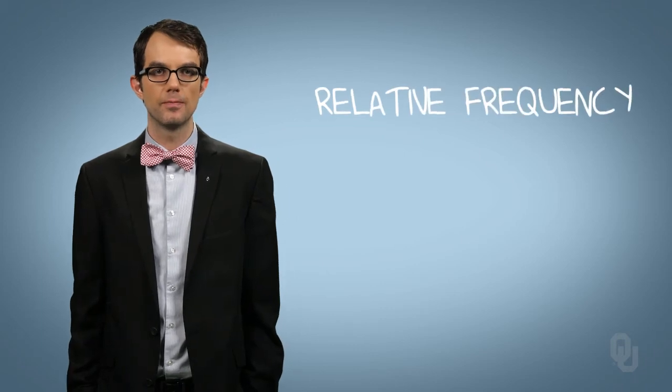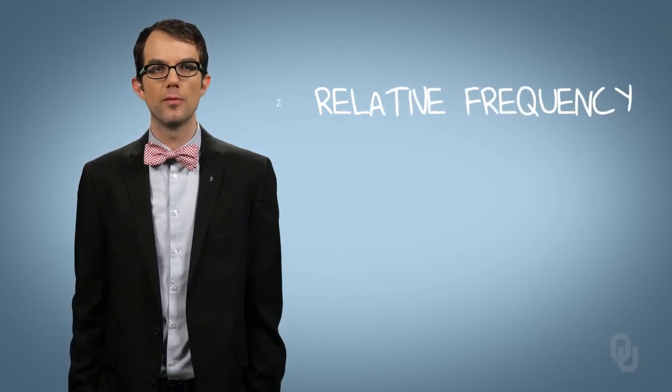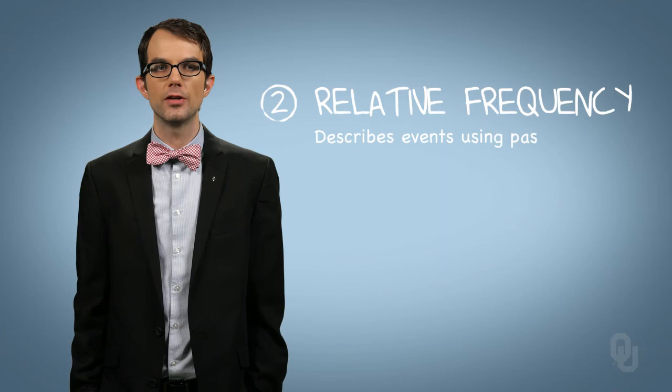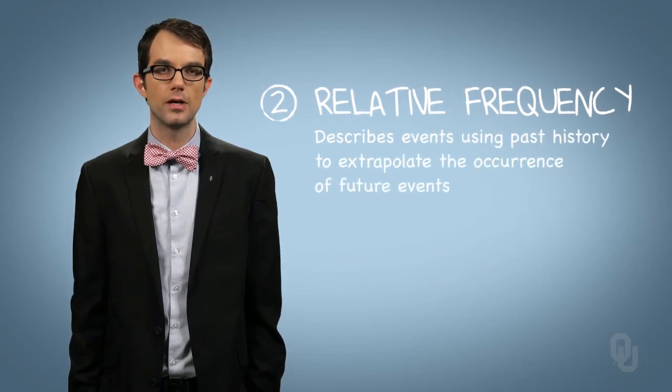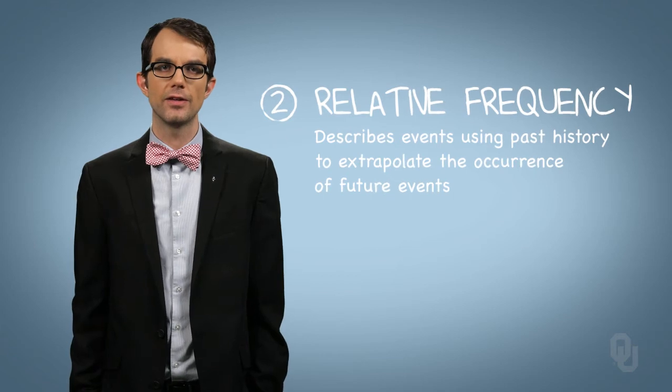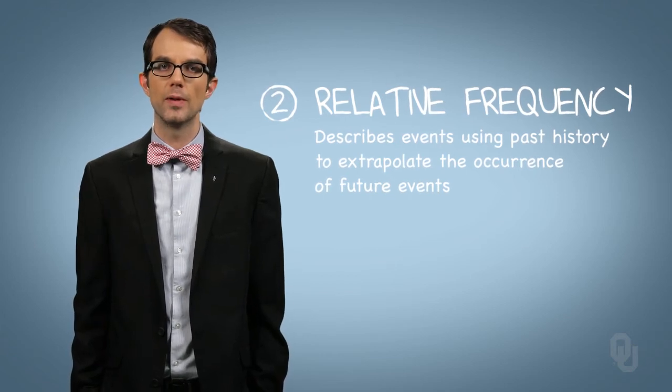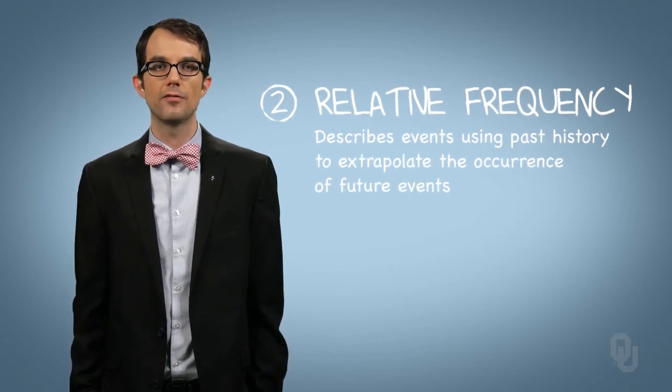The second view of probability is relative frequency. With the relative frequency view of probability, we describe events by using past history to extrapolate about the occurrence of future events. We don't know exactly how to calculate the numerator or denominator of the probability calculation. We only have past experience.